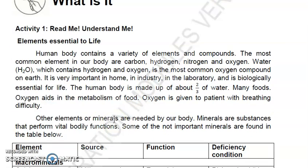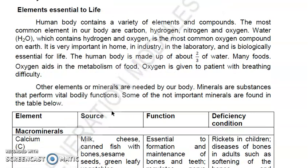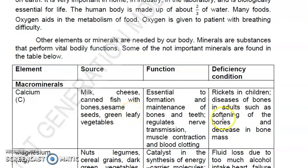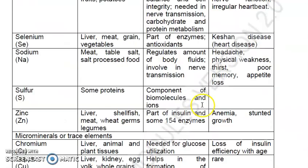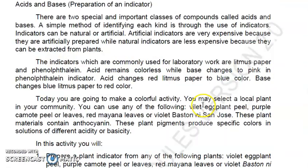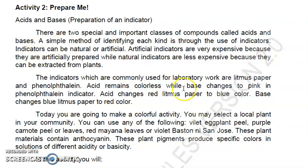Just also read this part - how essential elements are to our lives. For example, calcium. The source is milk, cheese, canned fish with bones, sesame seeds, green leafy vegetables. The function is it's essential to form and maintain the bones and teeth, regulates nerve transmission, muscle contraction, and blood clotting. The deficiency of this is rickets in children, so your bones will be deformed. Diseases of bones in adults such as softening of the bones and decrease in bone mass. Just read the remaining.